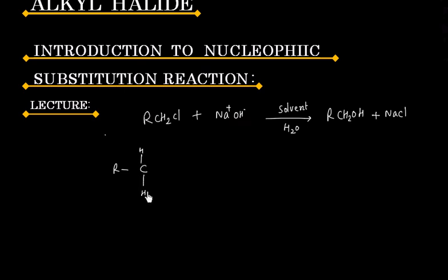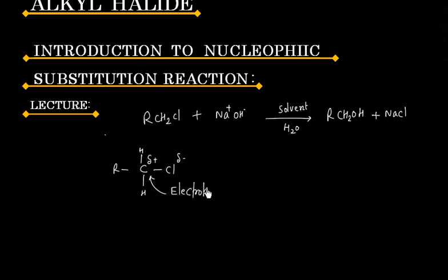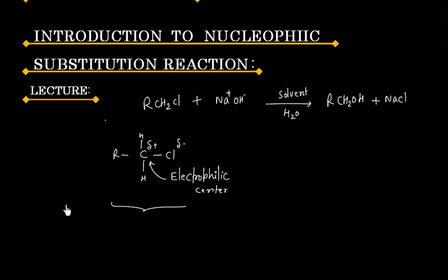If you see the structure of RCH2Cl, chlorine is an electronegative atom, so it will have a negative charge. Carbon is having some positive charge, so carbon is basically an electrophilic center. This molecule will act as an electrophile.